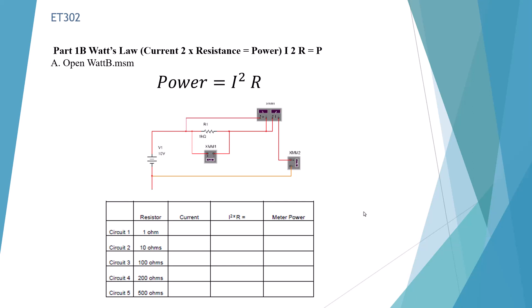Here we have the same circuit, and we're going to use a different formula: Power equals I squared R. Squared means we multiply I times I, and then times the resistance. The current is 10 divided by 1 ohm, which is 10 amps. So we take 10 times 10, which is 100, times 1 ohm — it's going to be 100 watts. Even though it's using a different formula, we still get the same answer: 100 watts.